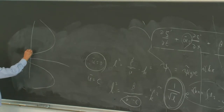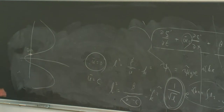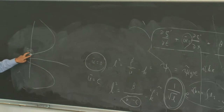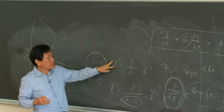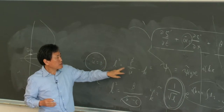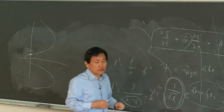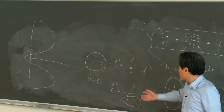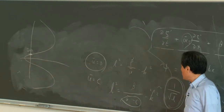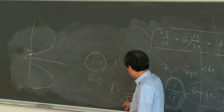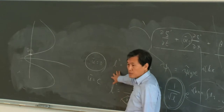If ū equals zero, that is the critical latitude. Around 10 to 15 degrees latitude, ū becomes zero, so that the wave number L becomes infinity. You cannot define L when ū is equal to zero.